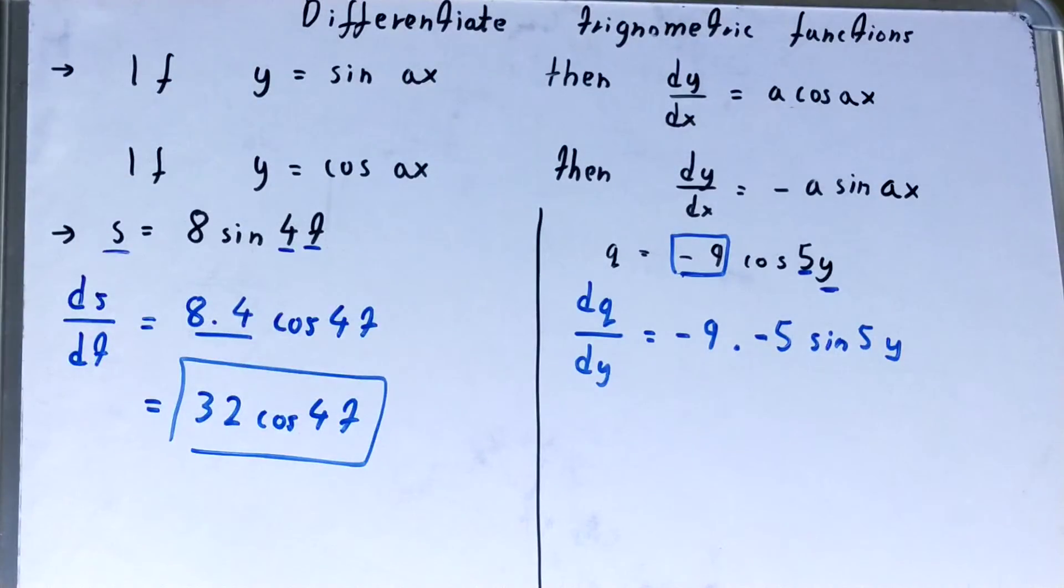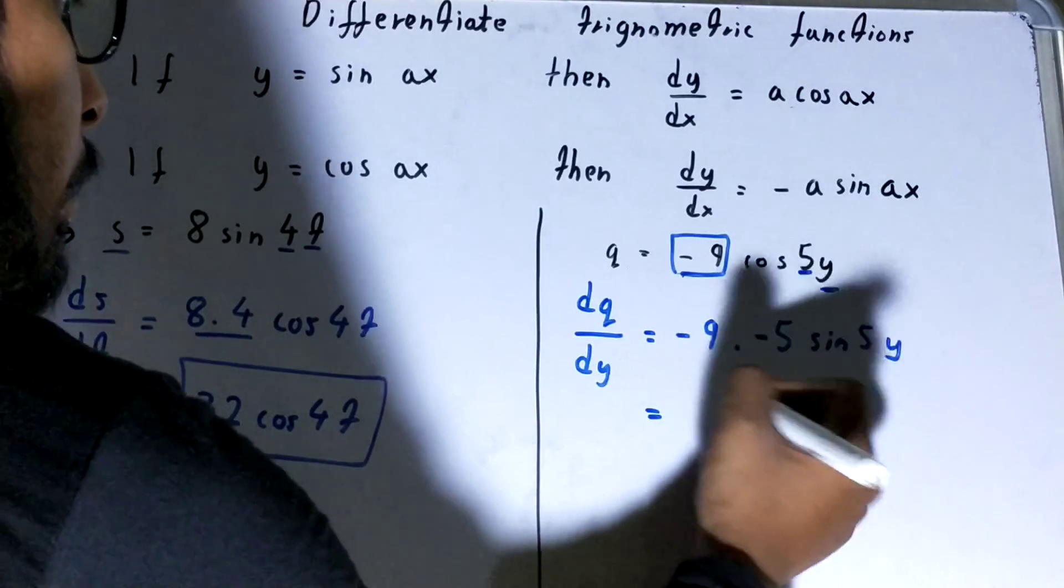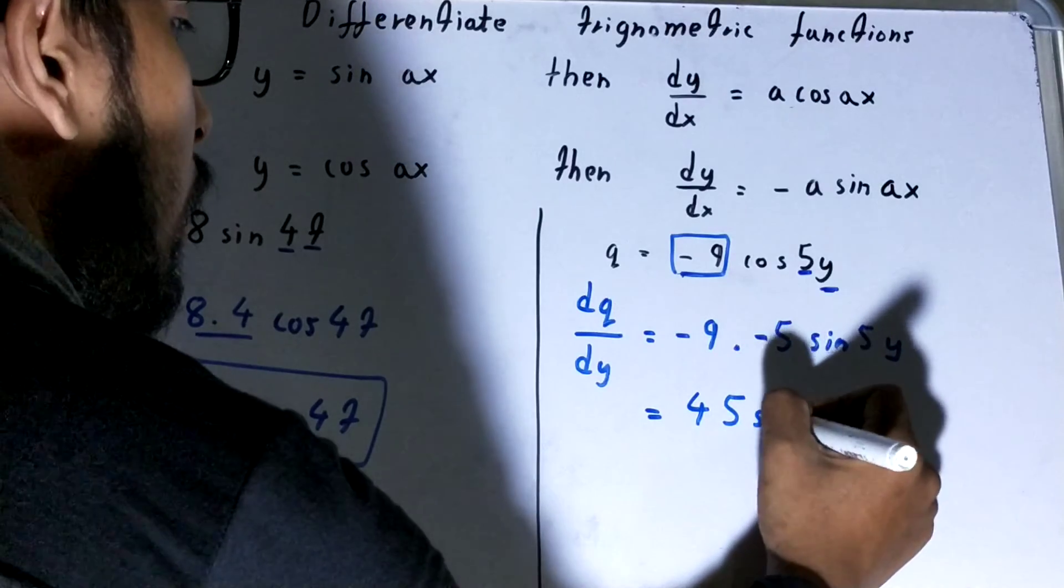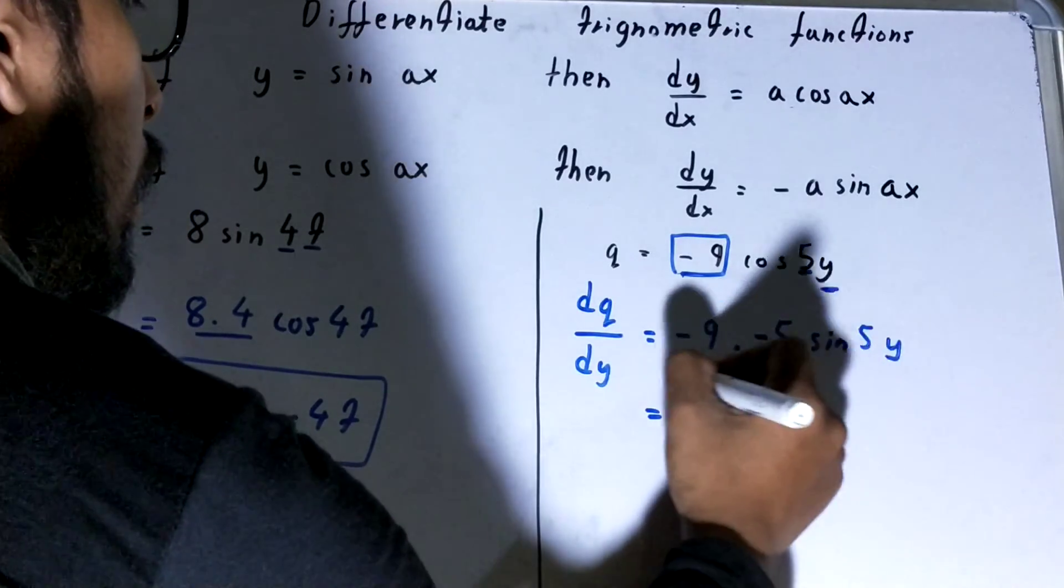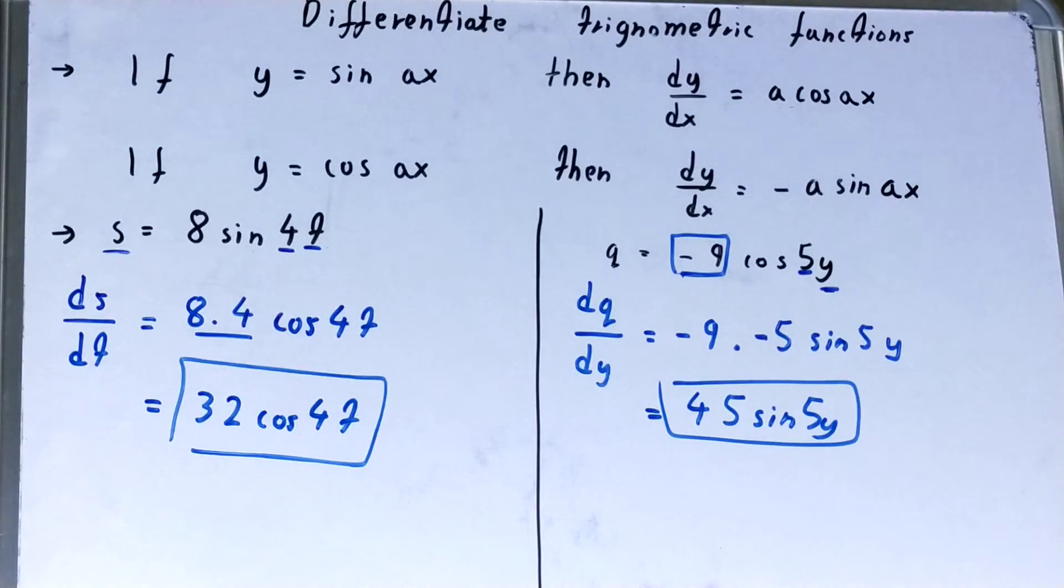Now just simplify it. 5 times 9 is 45, and this minus minus will turn into positive. So 45 sine 5y, and that will be my final answer. So this is how you can differentiate the trigonometric functions. If you like the video, please do hit the like button, do subscribe, and thanks for watching.